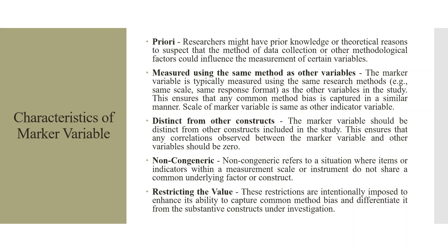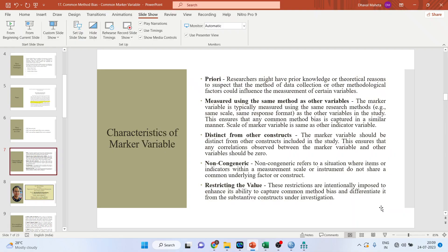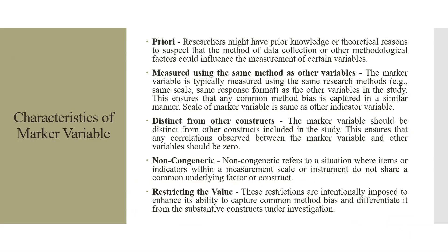Now we will include the marker variable in our data. Make sure you collect the marker variable during the stage of the survey only. Researchers might have prior knowledge or theoretical reasons to suspect that the method of data collection or other methodological factors could influence the measurement of certain variables. The second characteristic of the marker variable is that it is measured using the same method as other variables — for example, the same scale and same research format — to ensure that any common method bias is captured in a similar manner. The scale of the marker variable is the same as the other indicator variables.